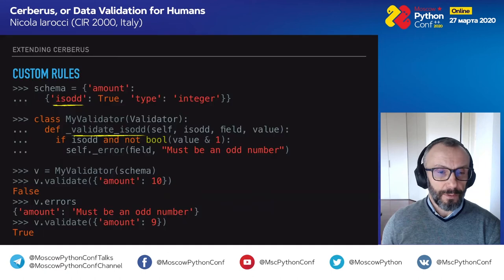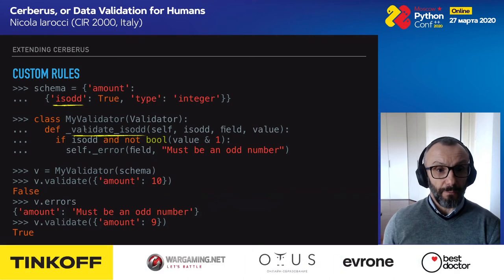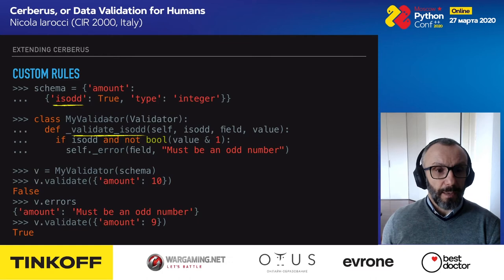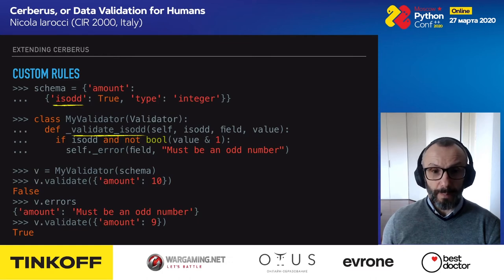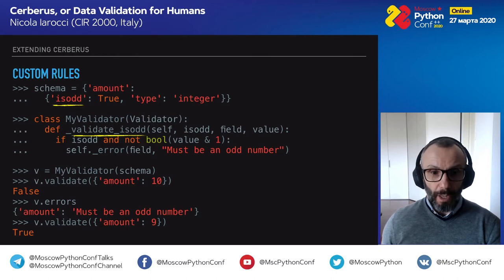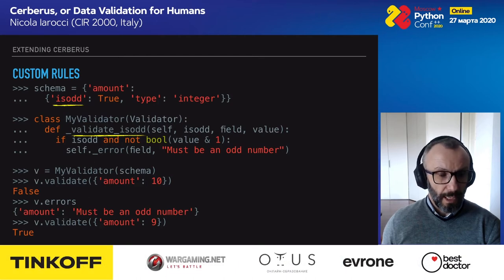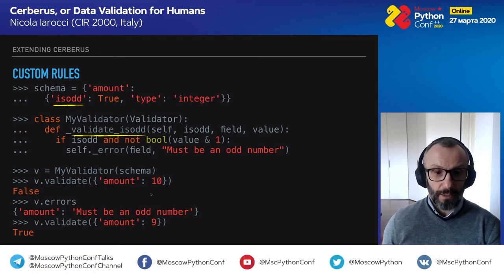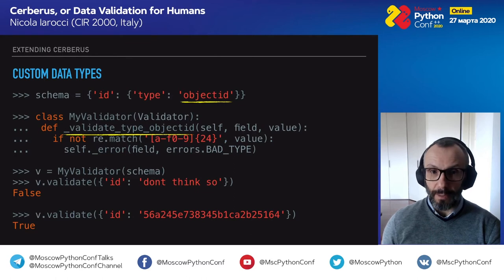You can build custom validation rules by subclassing the base Validator class. Define a method named _validate_{rule_name} — for example, _validate_isodd — apply your own logic within it, then instantiate your custom validator and use the new rule in your schema. In this example, an amount value of 10 is not valid because the rule requires an odd number.